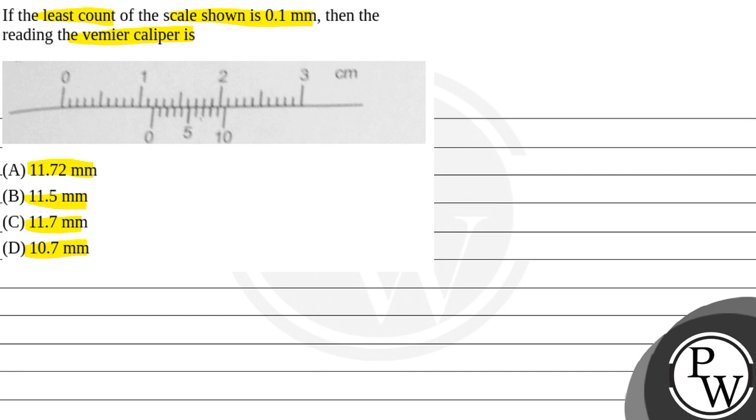Okay, so first of all, see the key concept of the question. This is a question related to vernier caliper. And in vernier caliper, reading is equal to main scale reading